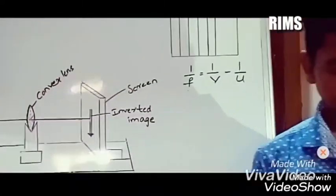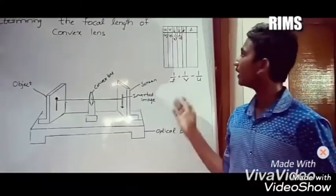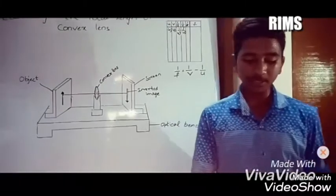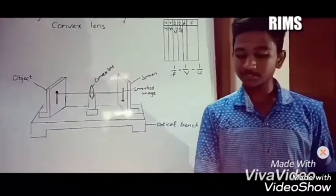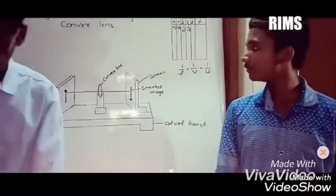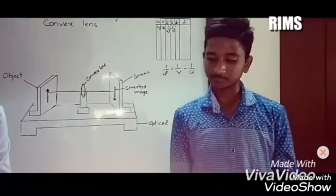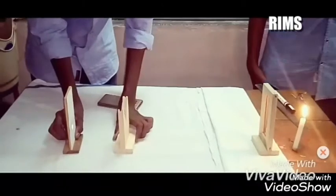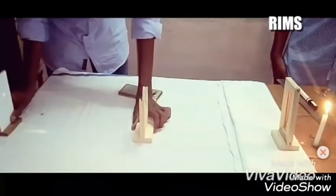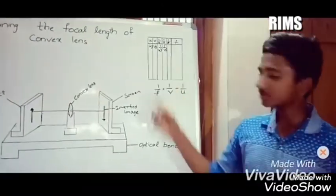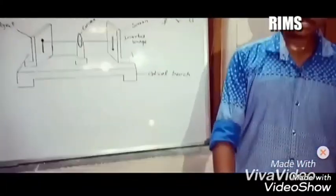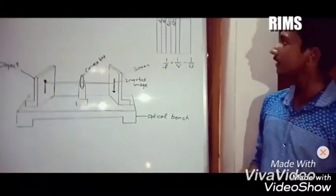After substituting the values, we will get the value of f. We should do this same experiment 5 to 6 times, so the average will be your focal length. Here we got the values are equal, so the object and the image are the same size, so here we got the same value.